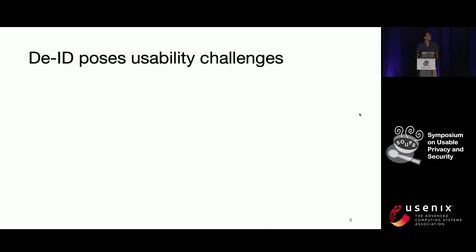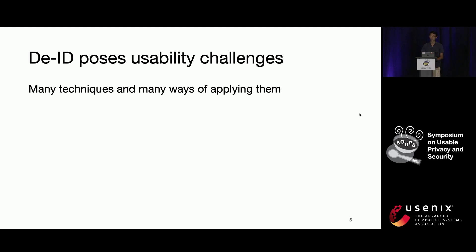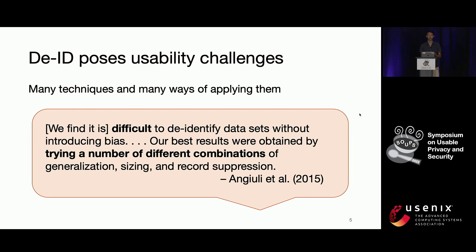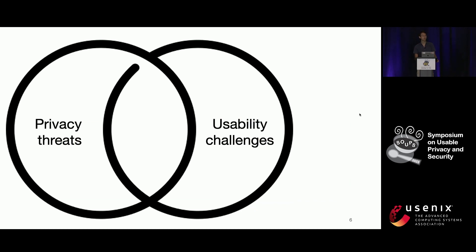Compounding some of these issues, de-identification poses usability challenges potentially as well. There are many techniques and many different ways of applying them. In a study in 2015, researchers attempted to de-identify educational data while balancing privacy and utility. They wrote a whole guide on it, but basically it's kind of difficult. It required a lot of trial and error of different combinations and configurations of traditional de-identification techniques.